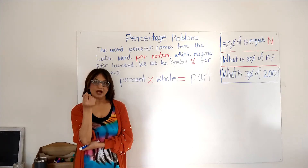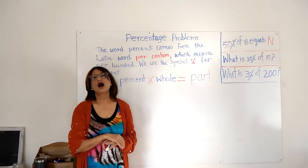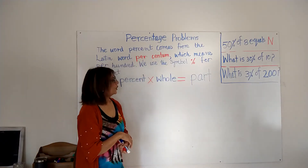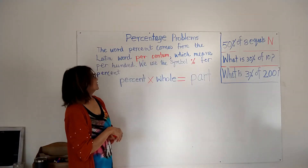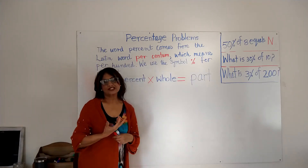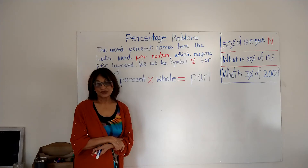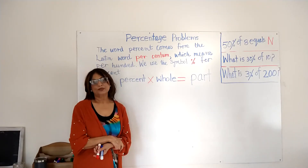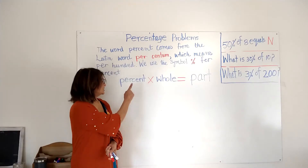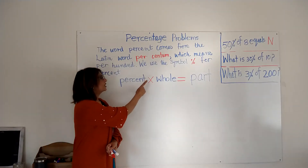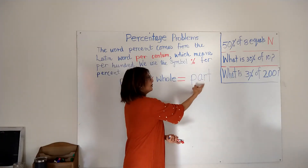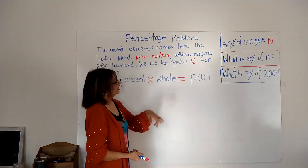When the part is missing, we'll solve for it. The method I'm going to use today is: percent times whole equals part.